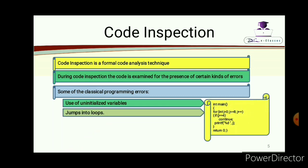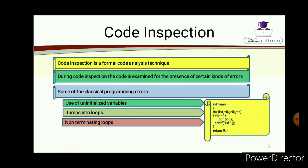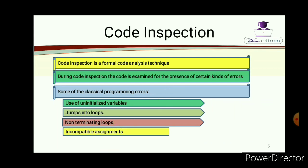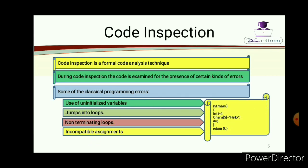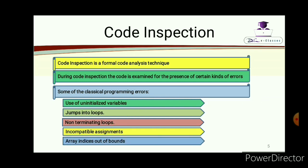Another classical error is jumps into loops — where by mistake execution continues into a loop and the expected output is not obtained. Non-terminating loops are another error, where a for loop never terminates, creating an infinite loop. Incompatible assignments occur when, for example, you assign a character array value like 'hello' to an integer variable. Array indices out of bounds is another classical error that can also happen.